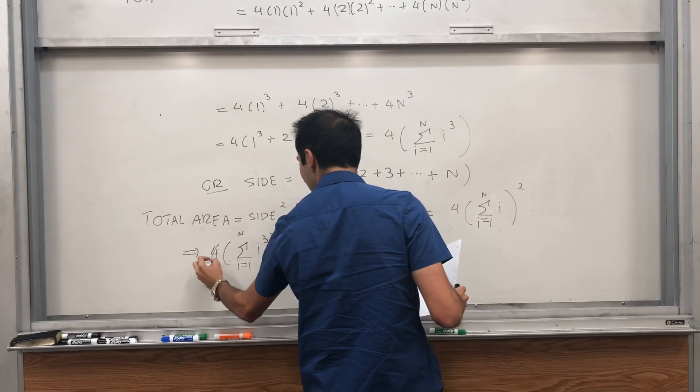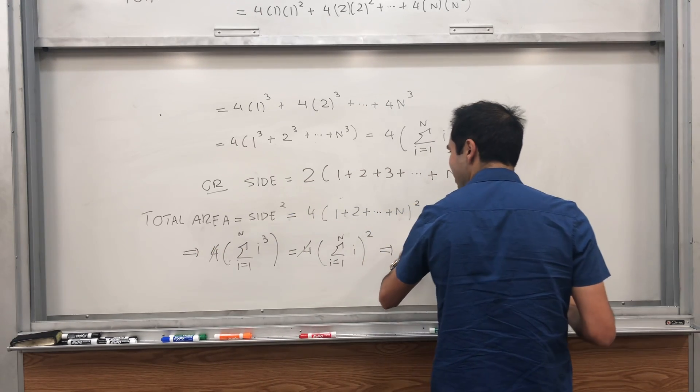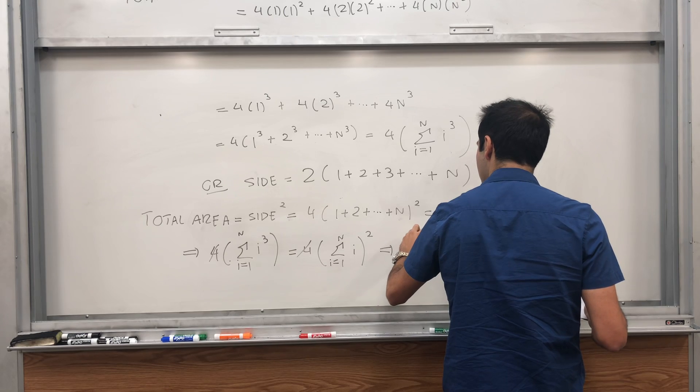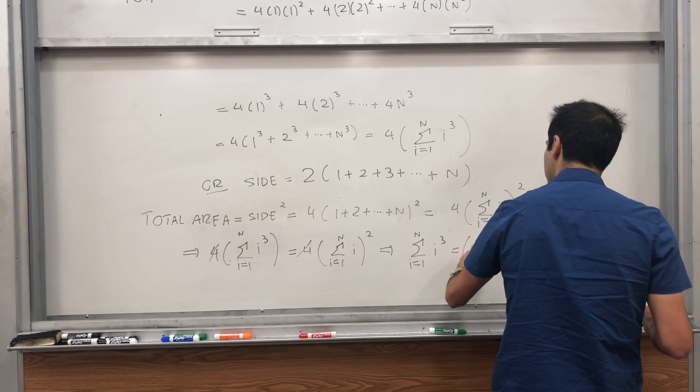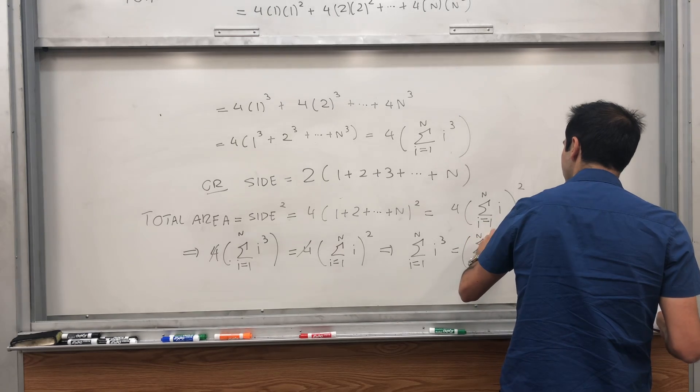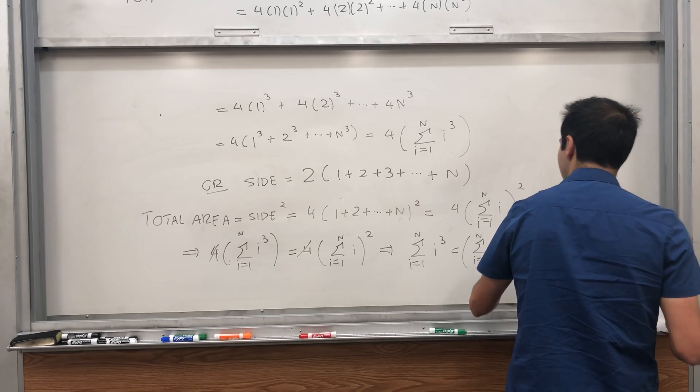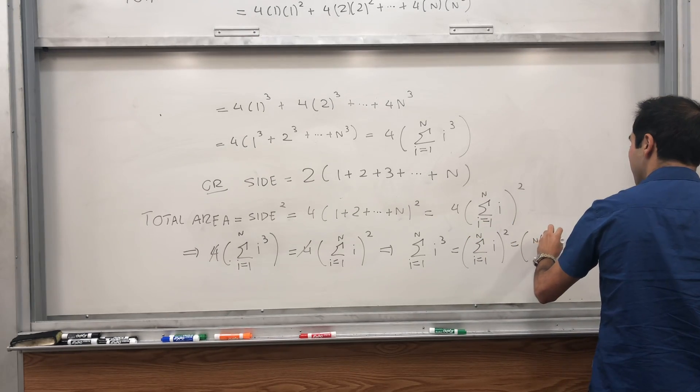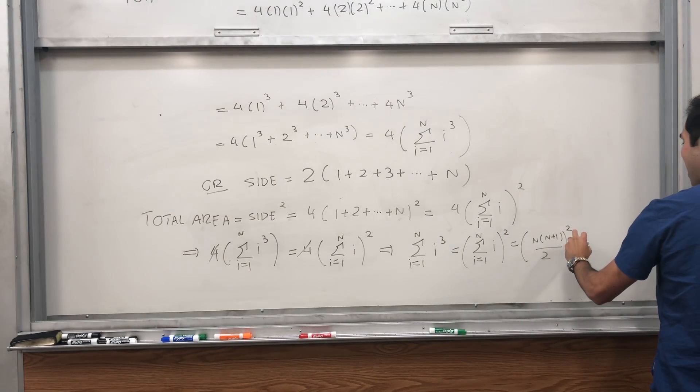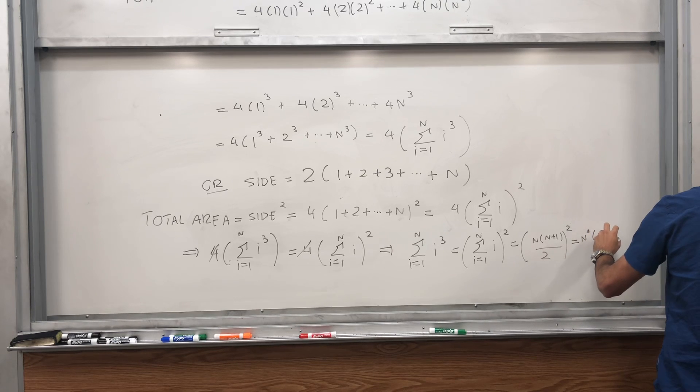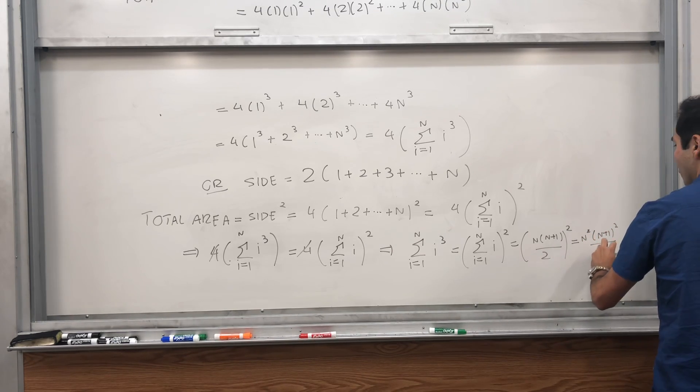You cancel out the 4, and then you get precisely that the sum of the cubes equals the sum of the integers squared. And that's precisely n times n plus 1 over 2 squared, which gives us our result n squared times n plus 1 squared over 4.